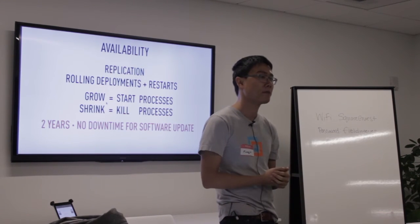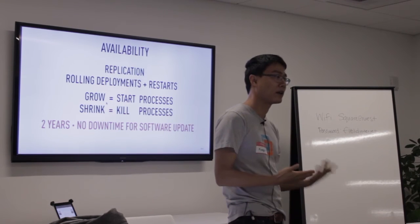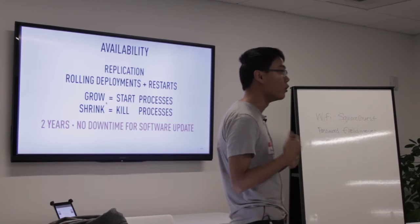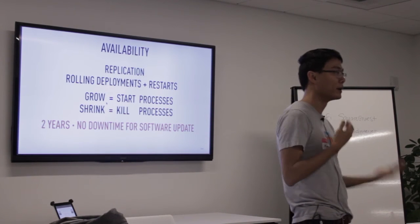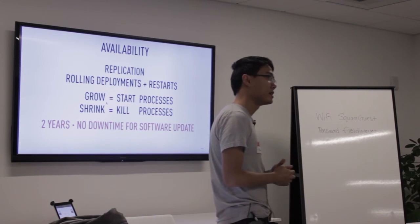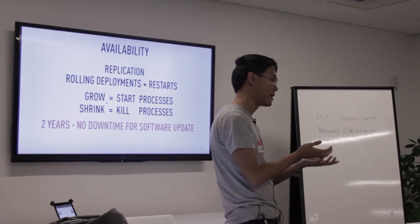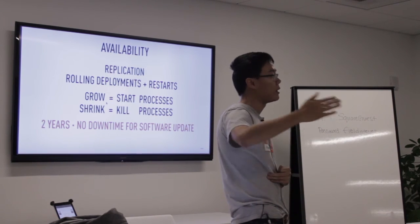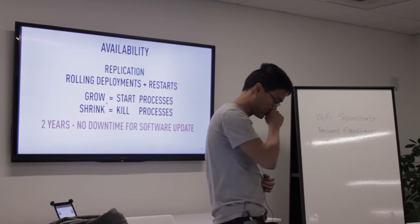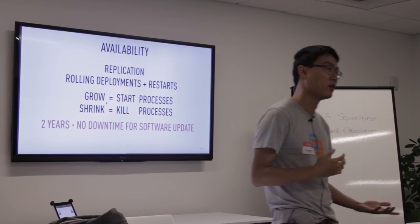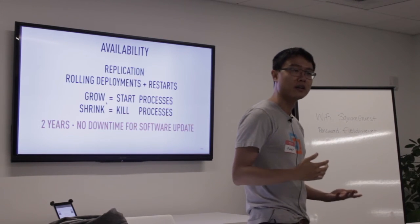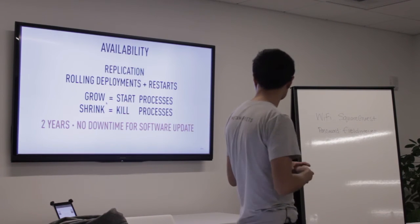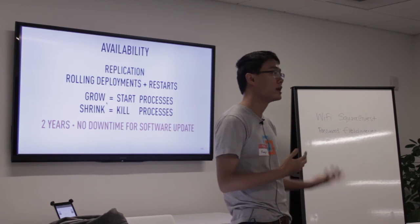In terms of availability, Druid is highly available and supports configurable levels of replication — if your data is more important, you replicate it more. If you lose a node, it's no big deal because your data is still available. We use this to our advantage to do software updates: you take one node down at a time, update it, bring it back up, and do this for every node in the cluster — a rolling update with no downtime. Druid is designed to run on commodity hardware; starting a Druid node is just starting a Java process, and terminating it is just stopping a Java process. For about two years, we've taken no downtime to do any software updates to Druid.